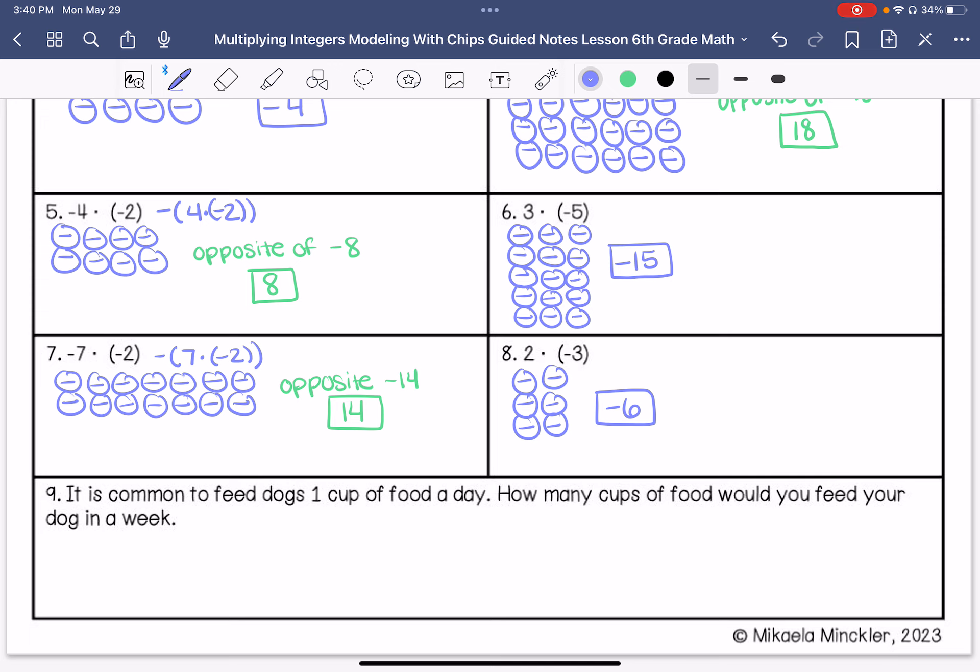Alright, number 9. It is common to feed your dog 1 cup of food a day. How many cups of food would you feed your dog in a week? So a week is 7 days. So we would have 7 groups of 1. This is basically 1 group of 7. 1 times 7. So my answer would be 7 cups.